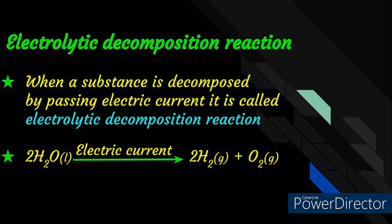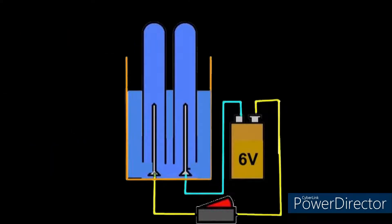Let us see this equation in detail. For example, take a plastic mug and drill two holes at its base and fit rubber stoppers in these holes. Insert carbon electrodes in the rubber stoppers and connect these electrodes to a 6 volt battery with a key. Fill the mug with water in such a way that the electrodes are immersed in the water.